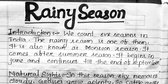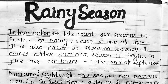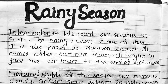We count 6 seasons in India. The rainy season is one of them. It is also known as monsoon season. It comes after summer season. It begins in June and continues till the end of September.